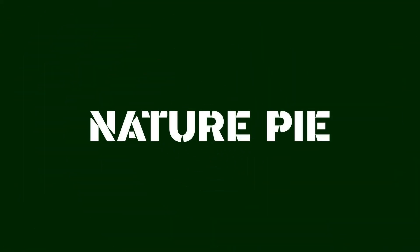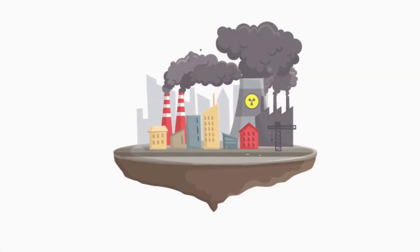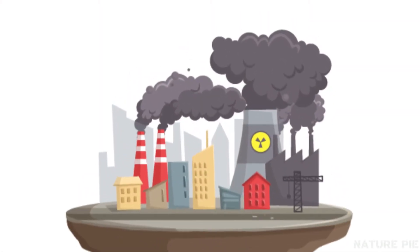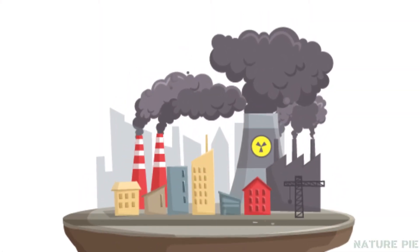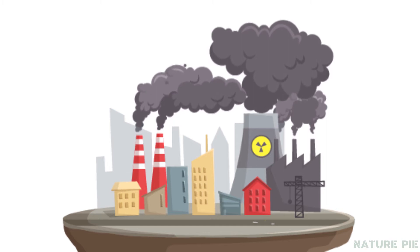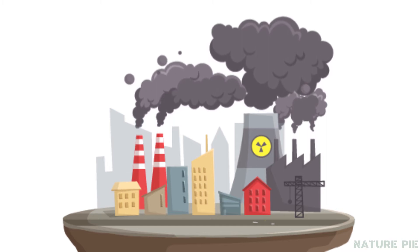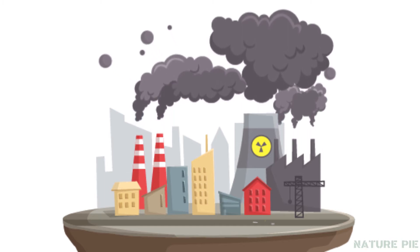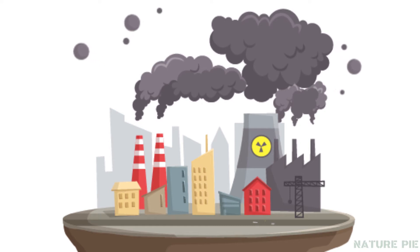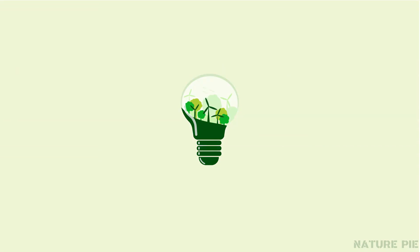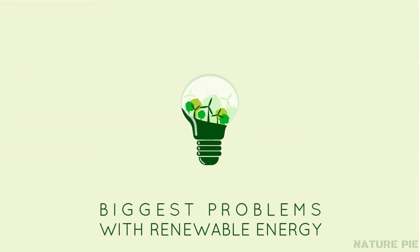What is the use of renewable energy? Increasing pollution is undoubtedly one of the biggest issues that we have to overcome, and the use of renewable energy is the ideal option to tackle the rising pollution levels. But there are some major worries which are making the concept of renewable energy a difficult one to implement. Let's take a look at those limitations of renewable energy which are preventing the use of renewables.